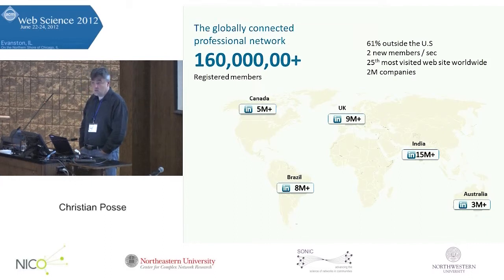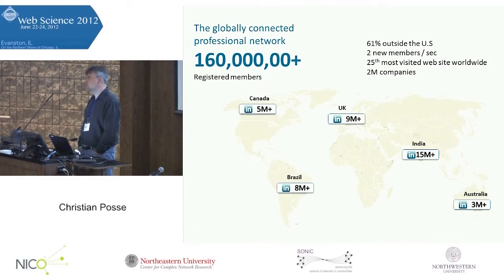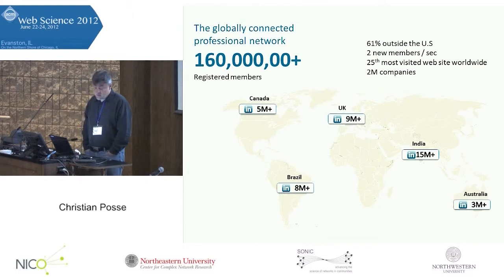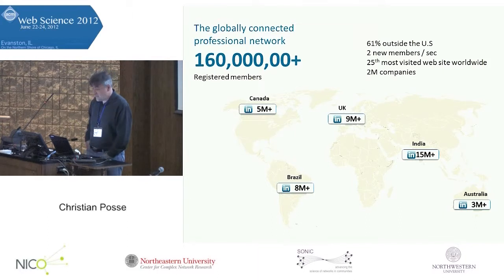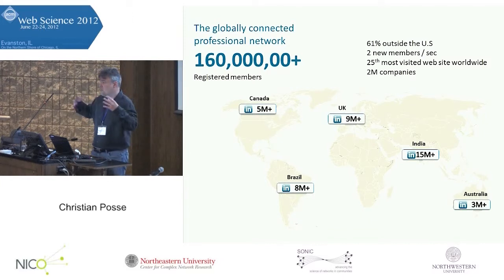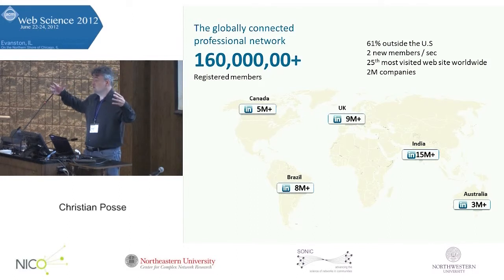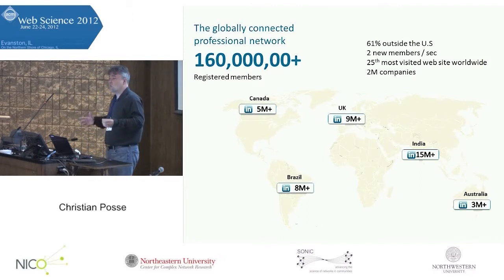We're growing very fast around the world — the majority of members are now outside the United States, acquiring around two to three new members per second. Two million companies are represented on LinkedIn because they want to reach professionals. As of last week, we are the 25th most visited website in the world. From a social network perspective, you start where you are and hop to your first-degree network, then to your second-degree network, and then to the third-degree. You realize very rapidly that you can reach pretty much everybody within the network within just two or three hops — that's the power of the network.